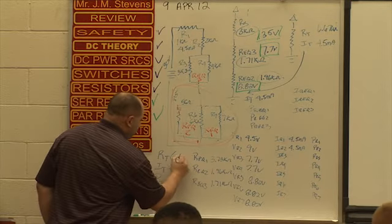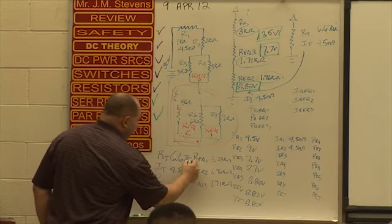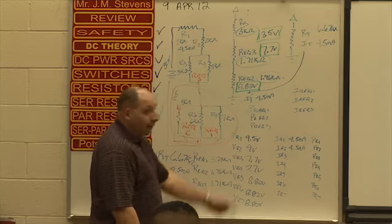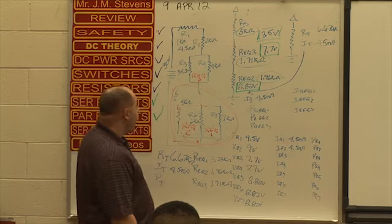Our total, 6.67k, we're just filling stuff in now. We have all our voltage drops, don't we? What do we need to do now?